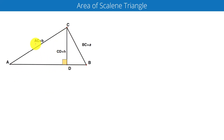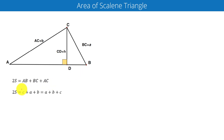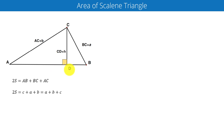In triangle ABC, the length of AC is equal to b, length of BC is equal to a, and length of AB is equal to c. We can define the perimeter of the triangle: 2s is equal to a plus b plus c. In triangle ABC, we have dropped a perpendicular from vertex C to side AB, which meets AB at point D.